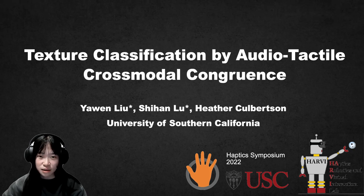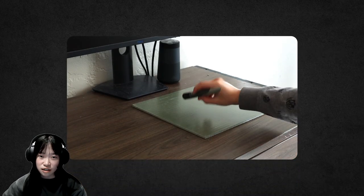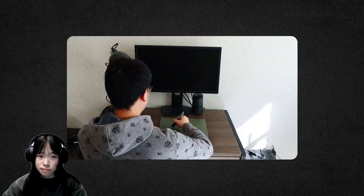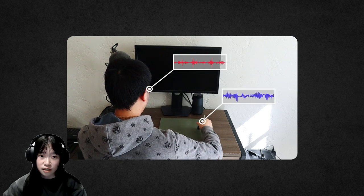Hi, my name is Yawen and today I'm going to talk about texture classification by audio-tactile congruence. Humans can easily recognize and classify textures by touching the surface with a tool. This process goes beyond the limits of vision and relies on both auditory and tactile feedback and their interplay.